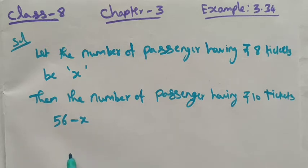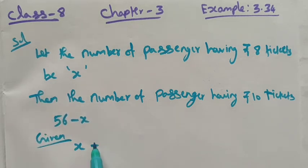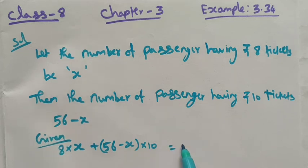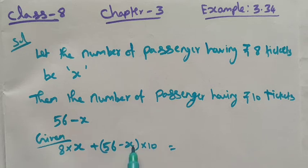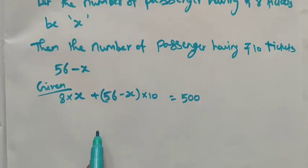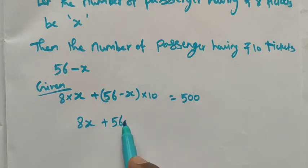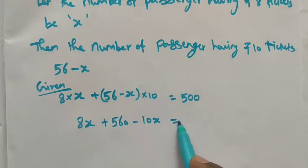The total amount given is rupees 500. Setting up the equation: 8 times x plus 10 times (56 minus x) equals 500. Expanding: 8x plus 560 minus 10x equals 500.